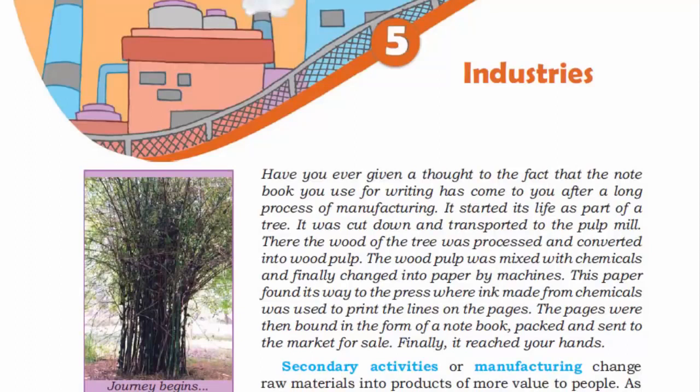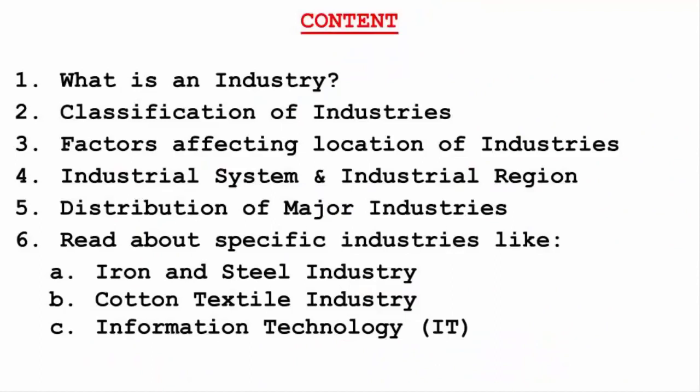These days our lives are much easier than before. I'm talking about cell phones, computers, lamp, electricity — and these changes have all been the effect of the industrial revolution. In this chapter, we'll read about what is an industry and the classification of industries, factors affecting location of industries, and then the industrial system and industrial region. In the end, we'll read about specific industries like iron and steel industry, cotton textile industry, and information technology.